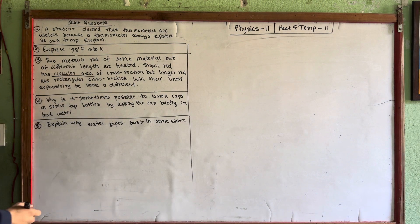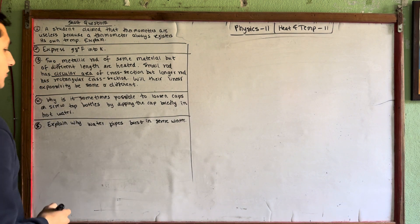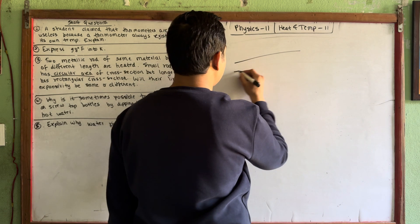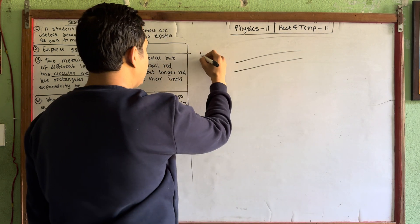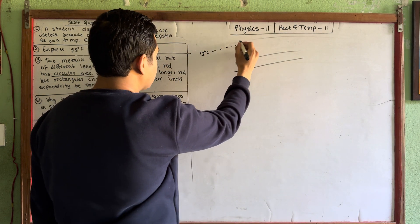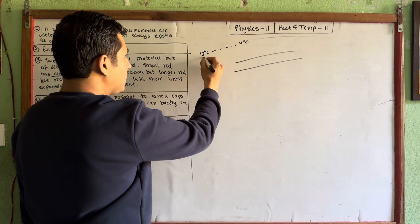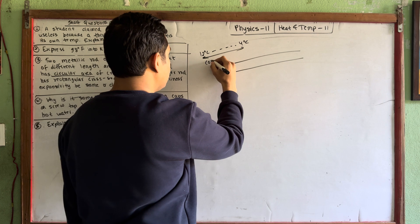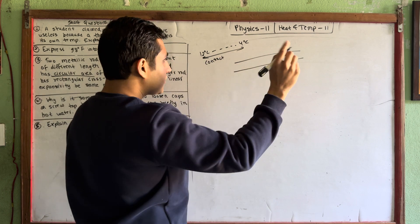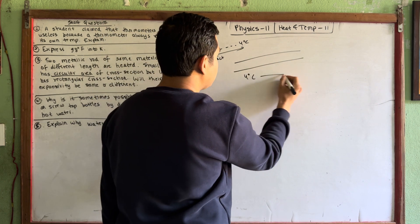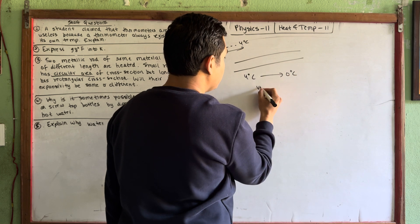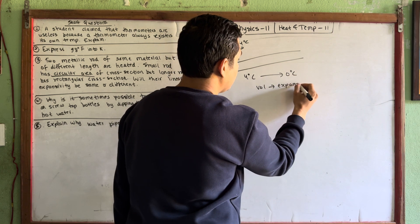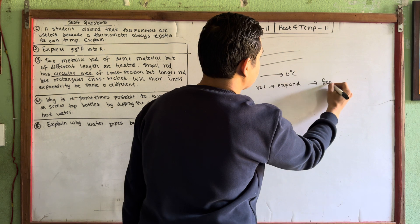Question 5: Explain why water pipes burst in winter. Water pipes at two degrees Celsius — when temperature drops, water contracts. But when it reaches four to zero degrees Celsius, the volume expands. Then it will freeze into ice, causing the pipe to burst.